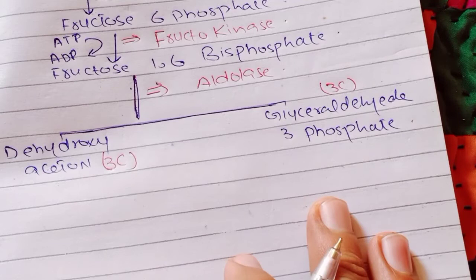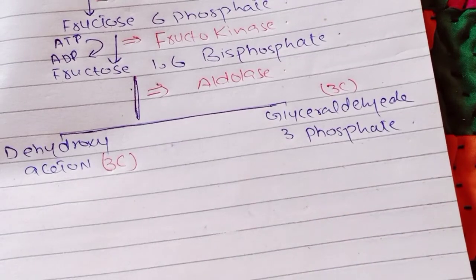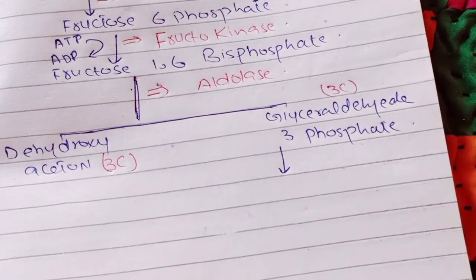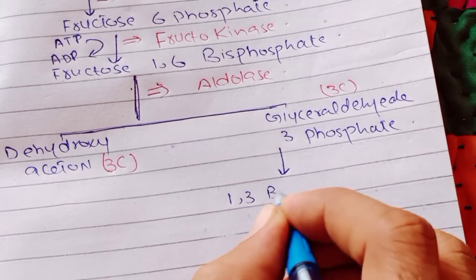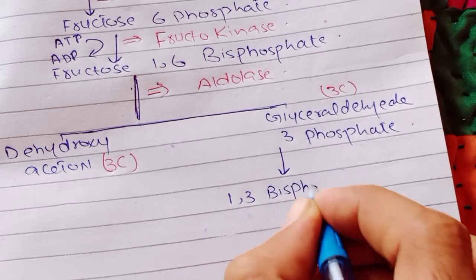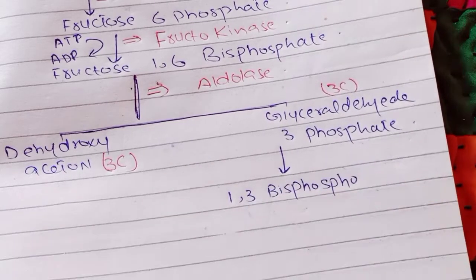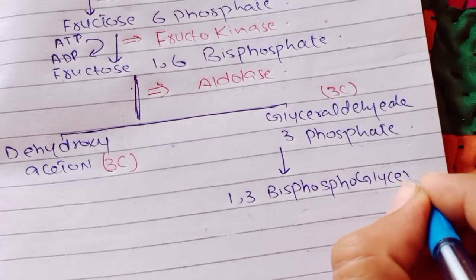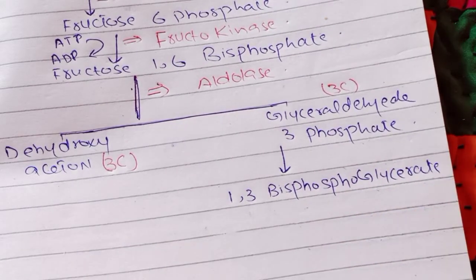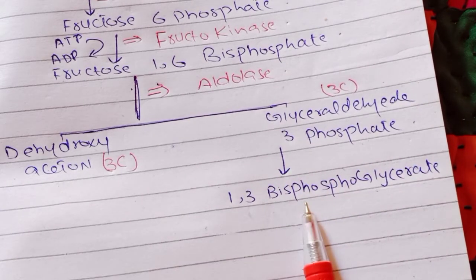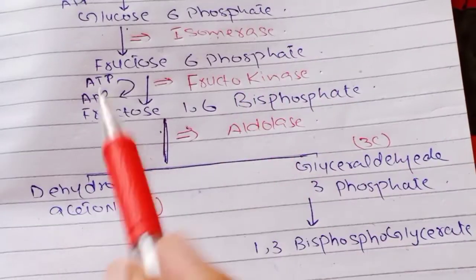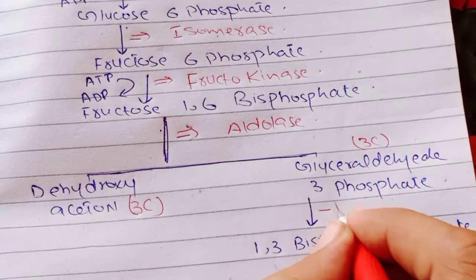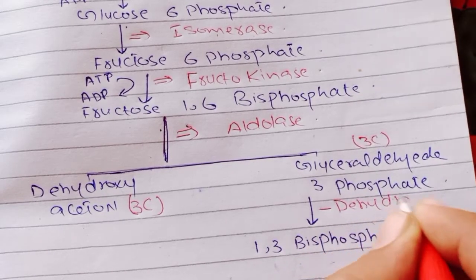Glyceraldehyde-3-phosphate will be converted into 1,3-bisphosphoglycerate. This step is catalyzed by the enzyme starting with D — that means Dehydrogenase.